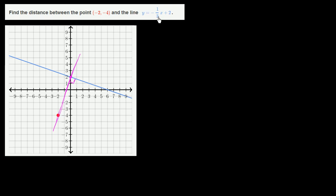The first step is to figure out what is the slope of this perpendicular line. The slope of a perpendicular line is going to be the negative inverse of the slope of this blue line. So the negative inverse of negative 1/3 is going to be positive 3. So this line right over here is going to have a slope of 3. It's going to have the form y is equal to 3x plus b, where b is its y-intercept. It looks like eyeballing it that b is going to be pretty close to 2, but let's verify that.